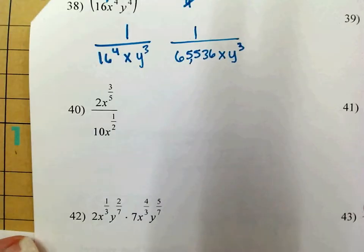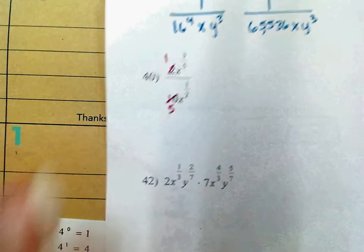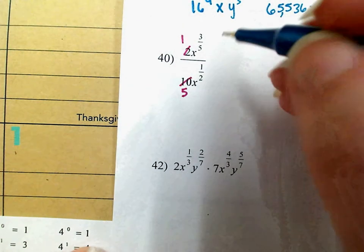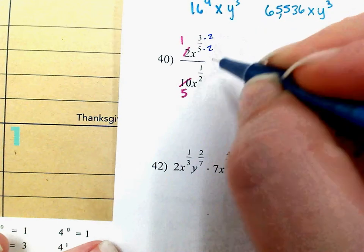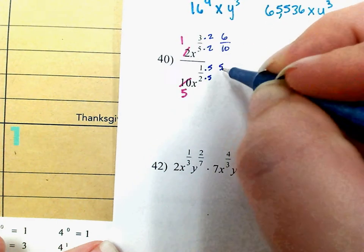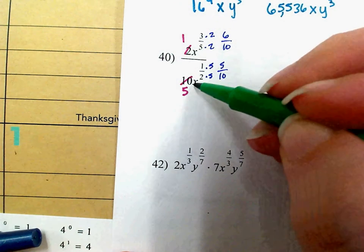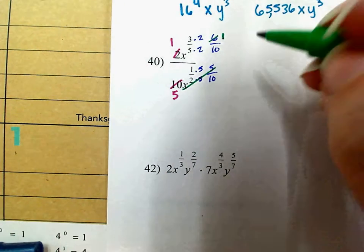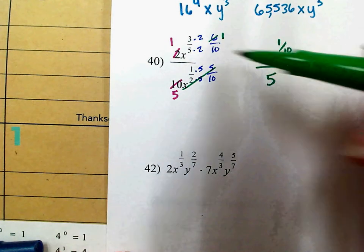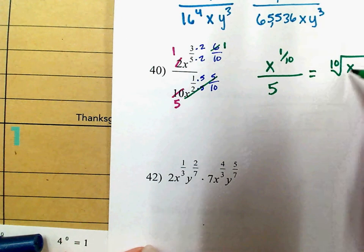On number 40, 2 and 10 simplify by 2, so 1 and 5. I want to find a common denominator between my powers — the common denominator between 5 and 2 is 10. I multiply top and bottom by 2 and by 5, which makes 6 tenths and 5 tenths. Canceling out 5 tenths with 5 tenths leaves me with 1 tenth in the numerator. That is x to the 1 tenth divided by 5, which I'll write as the tenth root of x over 5.